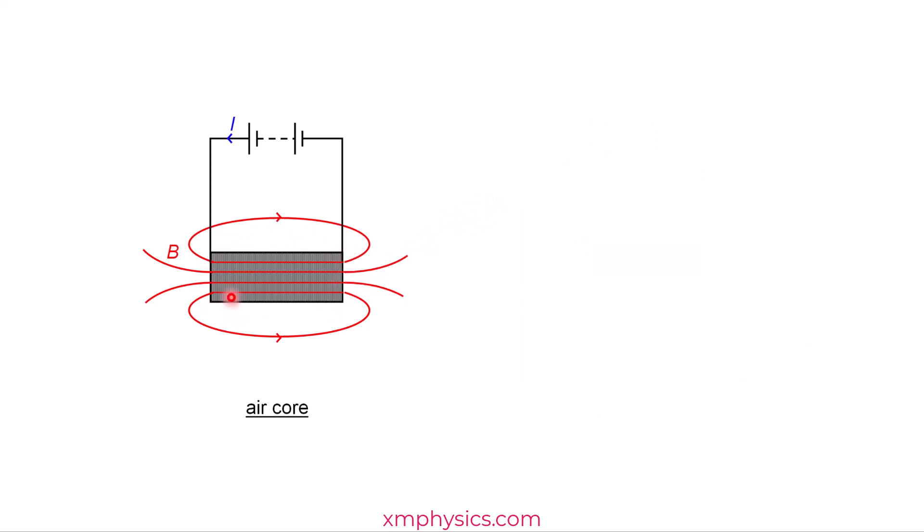Hi, we have here a solenoid with an air core, meaning there's nothing inside the coils. For such a solenoid, the magnetic flux density produced is actually very weak.